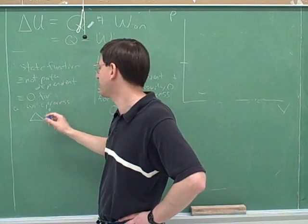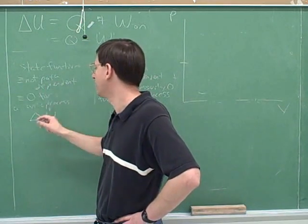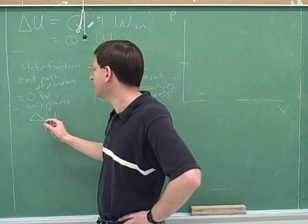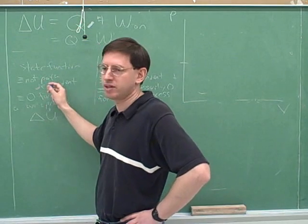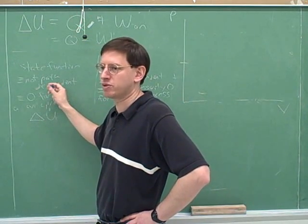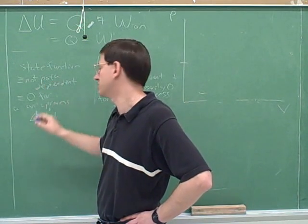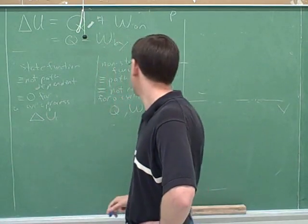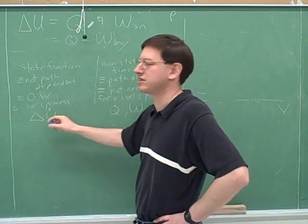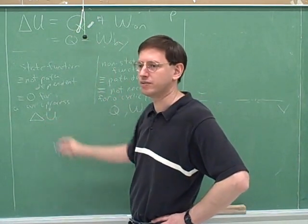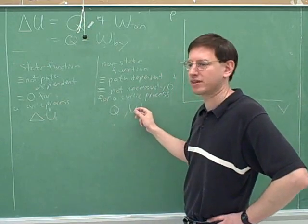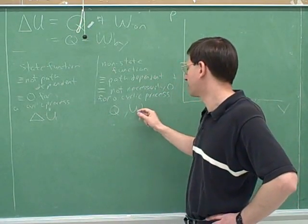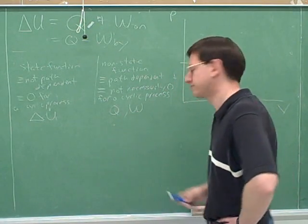The total internal energy of the gas only depends on the initial and final points. That means temperature only depends on the initial and final points, because temperature is related to delta U — temperature is not directly tied into Q, it's tied into delta U. Q and W are not state functions; W is the work done on or by the gas.